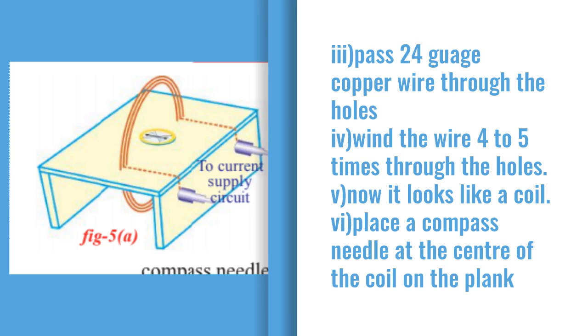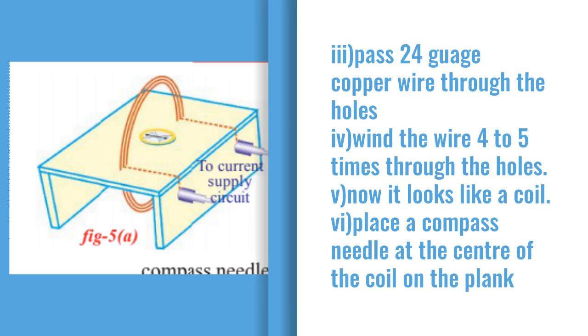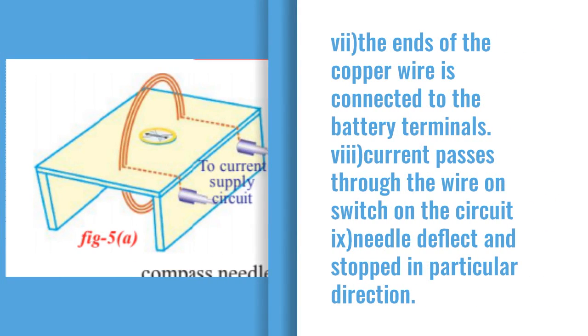Place a compass needle at the center of the coil on the plank. We are observing that at the center of that coil, a compass needle is kept. Now the ends of this copper wire should be connected to the battery terminals.